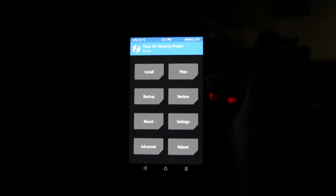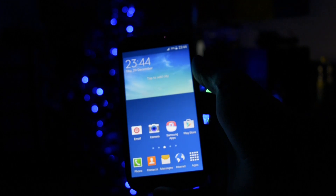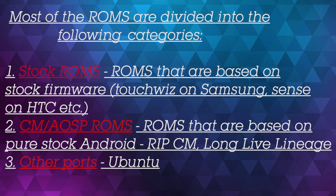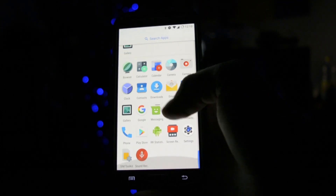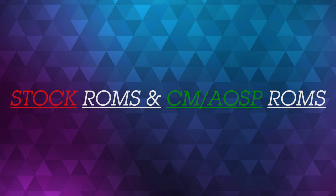Once you've successfully installed TWRP, you can easily install any ROM. Most of the ROMs you'll be flashing are either stock ROMs — ROMs based on stock firmware like TouchWiz-based ROMs on Samsung or Sense UI-based ROMs on HTC — or CM/AOSP ROMs for a pure stock Android experience. Note that CyanogenMod has shut down, and LineageOS will continue the project. You could also look at other ports like Ubuntu, but we'll stick to those two main categories: stock ROMs and CM/AOSP ROMs.